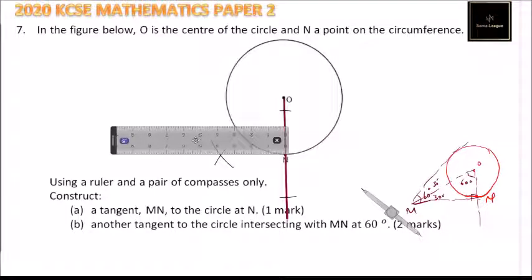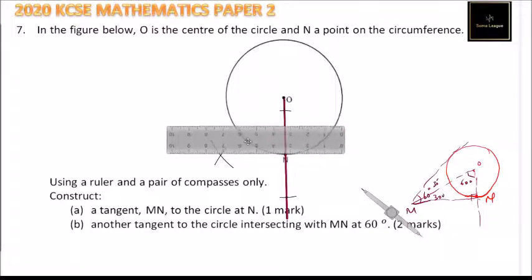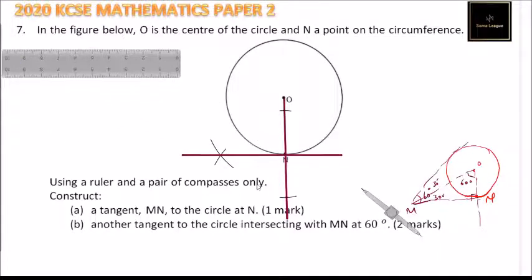These two points, we can extend it and use that point now, we draw a line. Okay, so we have obtained our tangent. That is the tangent that is required. You can place it there.